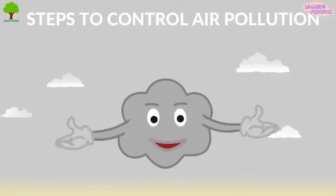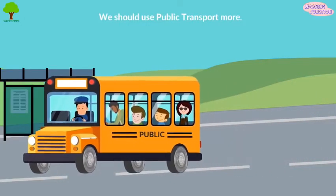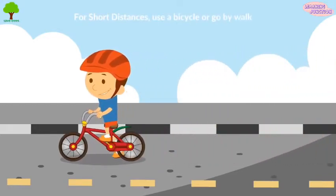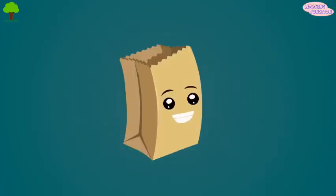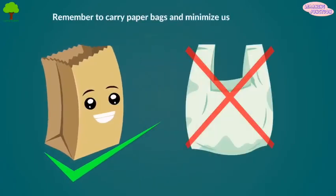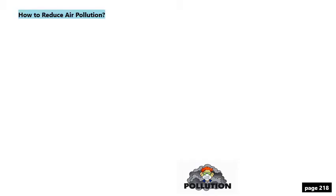We should take proper steps to control air pollution. We should use public transport more. For short distances, use a bicycle or go by walking. Switch off lights, fans, air conditioners, and other appliances when not in use. Always recycle and reuse. Remember to carry paper bags and minimize using plastic bags. Plant trees as much as possible. Keeping our air clean is very important to protect life on Earth, since air pollution has harmful effects on all kinds of life.